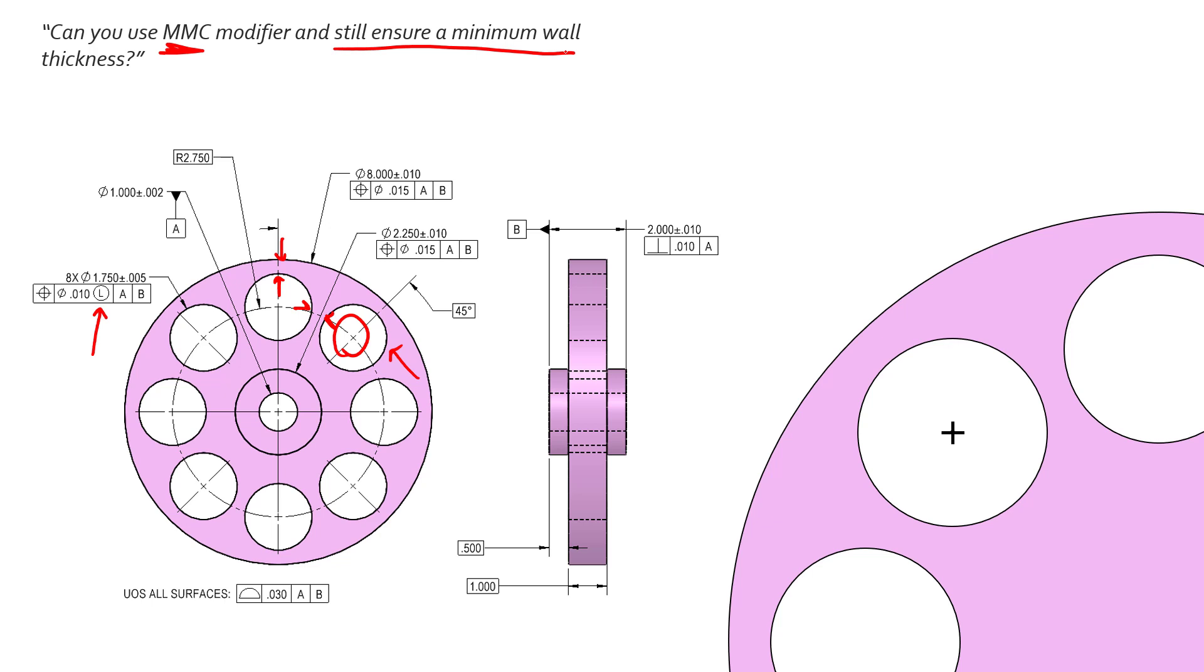The short answer is no. You can calculate what that wall thickness would be, but it's going to vary based on if you're measuring towards the MMC size of the feature of size or the LMC size. So as you know, every feature of size has an MMC state and an LMC state, regardless of what feature control or what feature control frame says or what modifiers used.